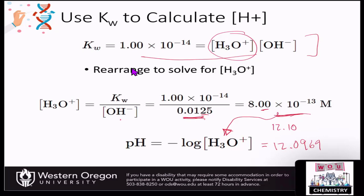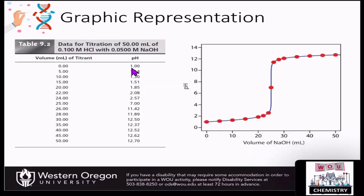By calculating pH at many different volumes of titrant added, you can predict and plot values to create a full titration curve — the graphic representation of the titration — which lets you predict the endpoint with high accuracy. You'll practice problems like this in class. Next time, we'll address weak acids and weak bases, and what happens when you titrate a weak acid with a strong base or a weak base with a strong acid.